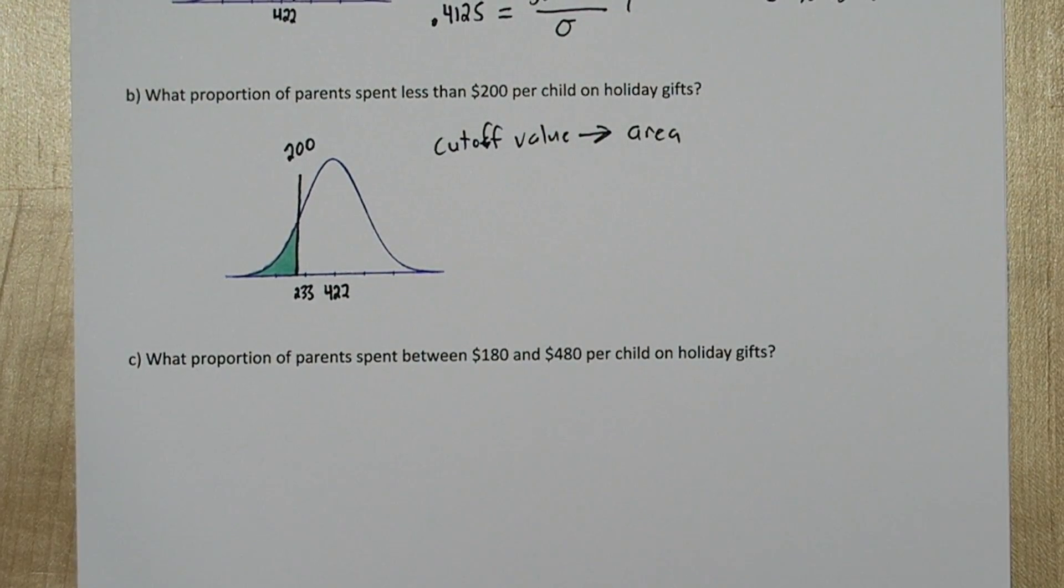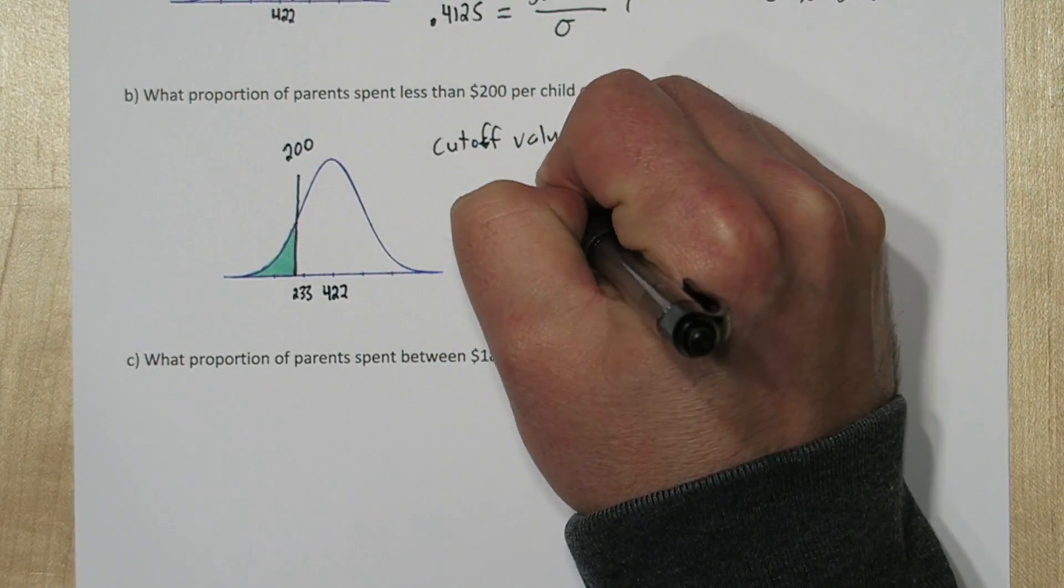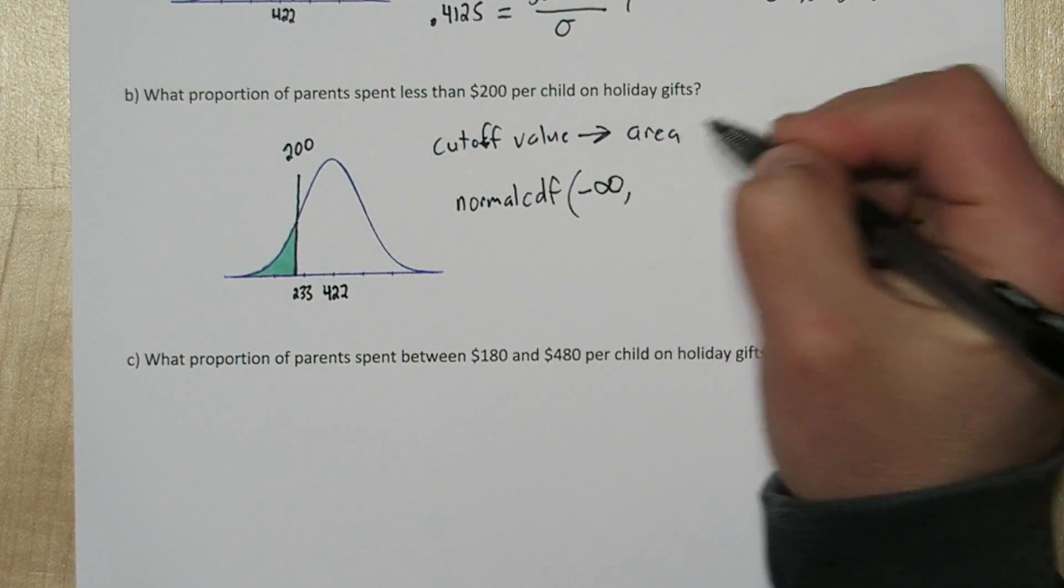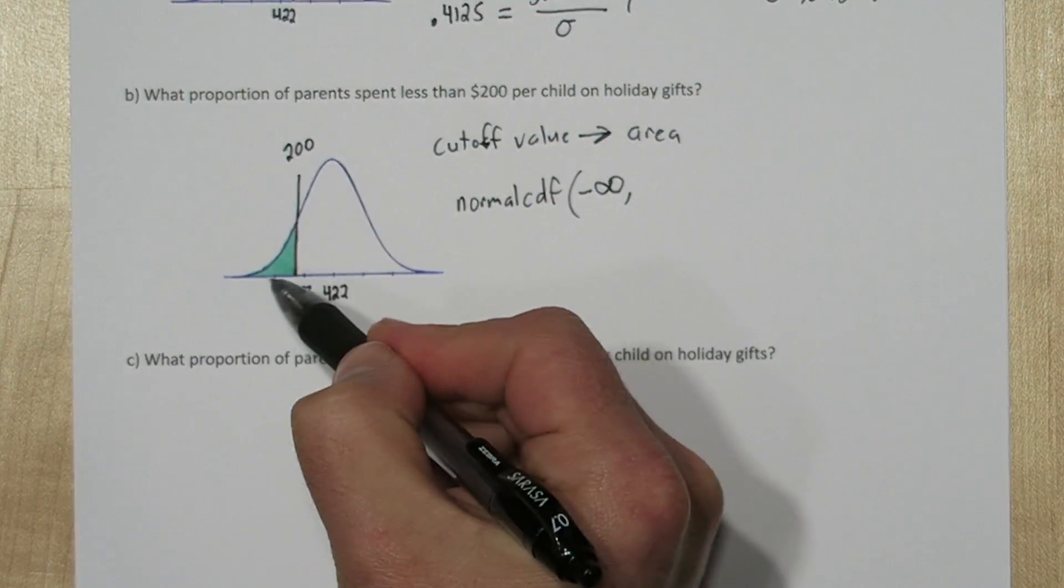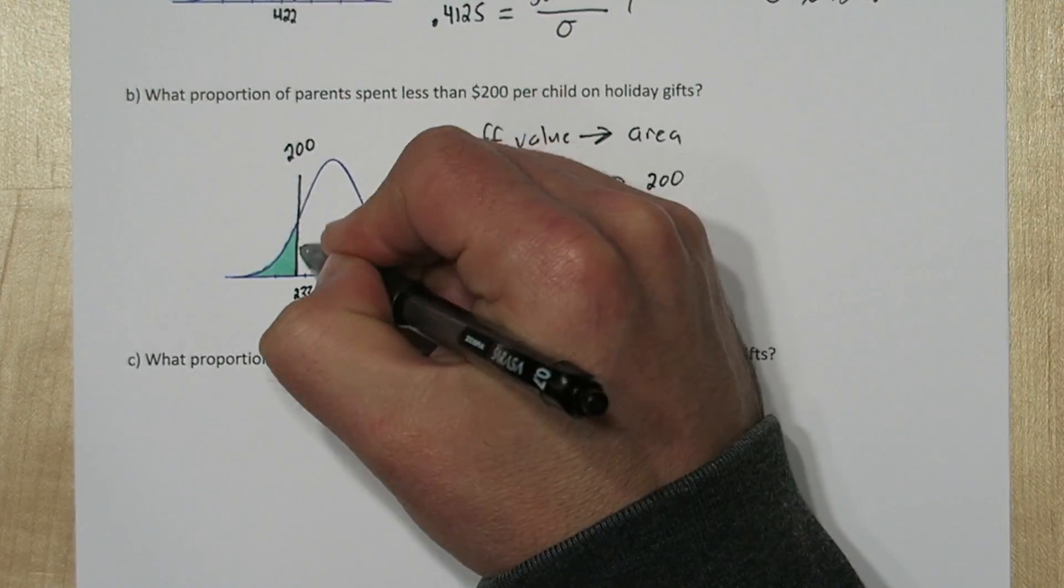So in this case, since we have a cutoff value and we're trying to find an area, we're going to use normal CDF. Our lower limit is negative infinity, because we want the area all the way to the left. Our upper limit is 200, our cutoff value.